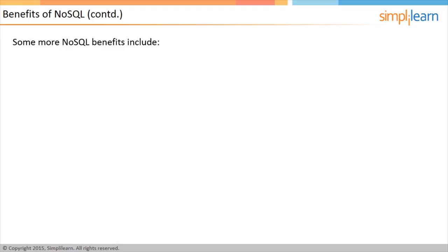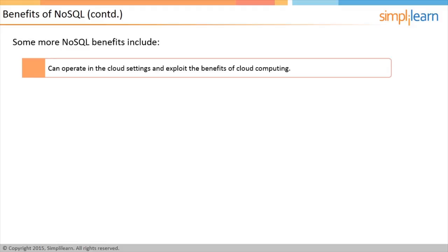Cloud Ready: As adoption of cloud infrastructure increases, an enterprise-class NoSQL solution must be cloud ready. A NoSQL database cluster must be able to function in a cloud setting such as Amazon EC2, expand and contract a cluster when necessary, and support a hybrid solution where part of the database is hosted on-premises and another part is hosted in the cloud.